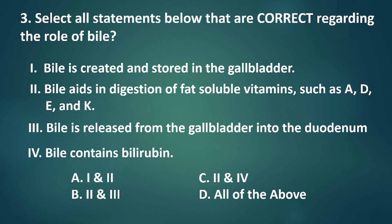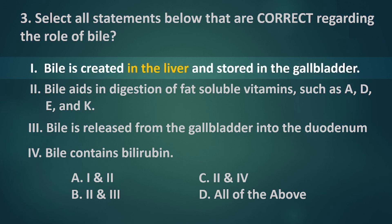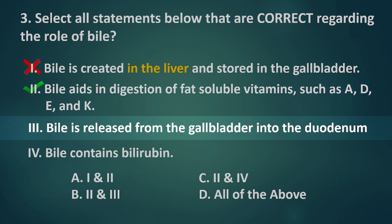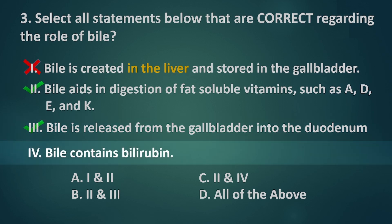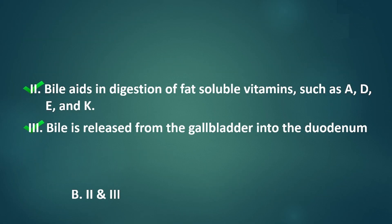Applying the process of elimination: Bile is created in the liver, not in the gallbladder, which makes statement 1 incorrect. Bile aids in digestion of fat-soluble vitamins such as A, D, E, and K is a correct statement. Bile is released from the gallbladder into the duodenum is a correct statement. Bile doesn't contain bilirubin as they are two different substances, even though both are produced in the liver, which makes statement 4 incorrect. Therefore, the correct answer is letter B: 2 and 3.